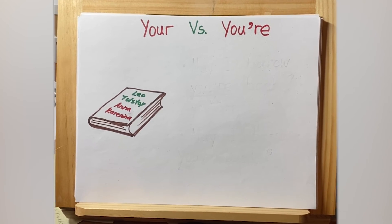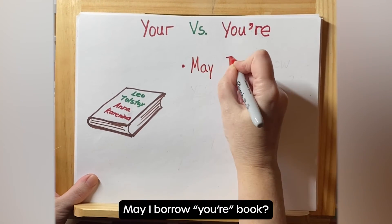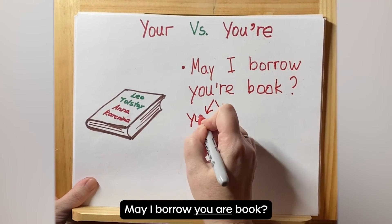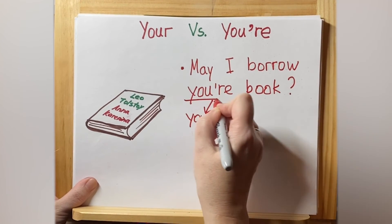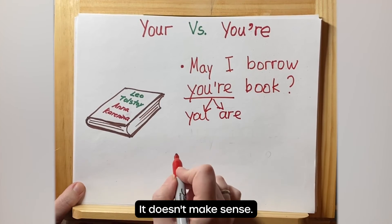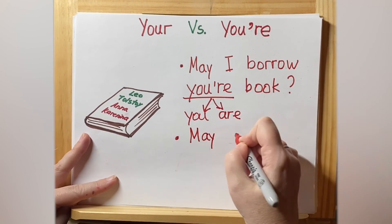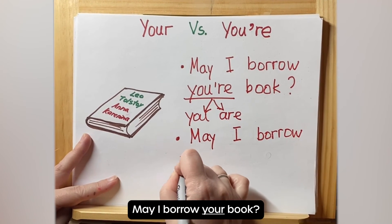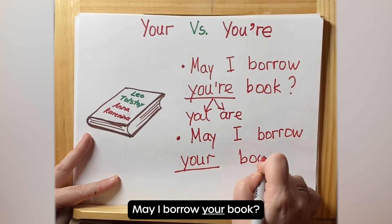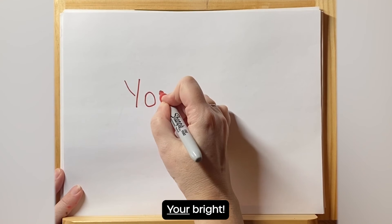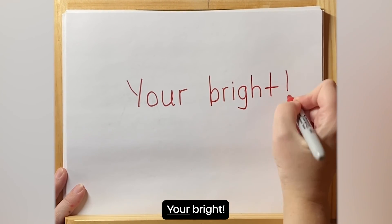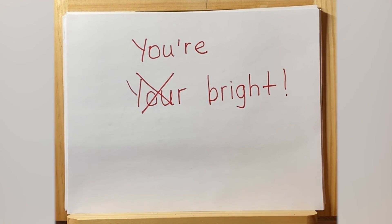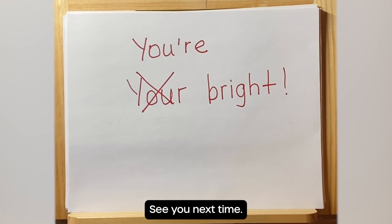For example: 'May I borrow your book?' If we substitute 'you are,' it doesn't make sense — so 'your' is correct here. 'You are bright' — this makes sense, so the correct form is 'you're bright.' I hope this video was useful. See you next time!